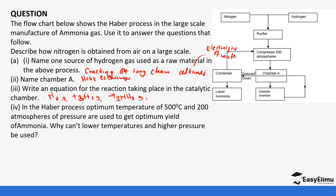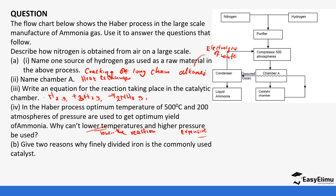In the Haber process, optimum temperatures of around 400 to 450 degrees Celsius and pressures of 200 atmospheres are used to get the optimum yield of ammonia. Why can't lower temperatures and higher pressures be used? This is because low temperatures would slow the reaction down — this lowers the rate of reaction. And higher pressures are very expensive to obtain. We want optimum temperatures — not so low that the reaction is too slow, and not such high pressures that they are too expensive to obtain. That is the reason why we use a catalyst instead.